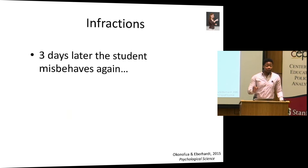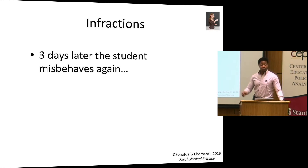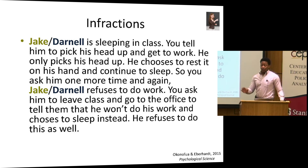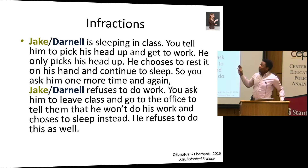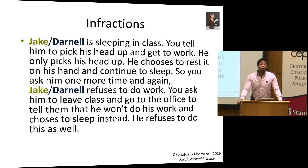Returning to the time element and how trait labels play out in relationships: we told teachers that the same student misbehaved again three days later, getting at how an ongoing relationship plays out. They then read about a second infraction — what would be classified as insubordination or willful defiance, which is the number one reason for children to be sent to the office and suspended across the country. Again, not fighting or sexual harassment, but something more subjective.